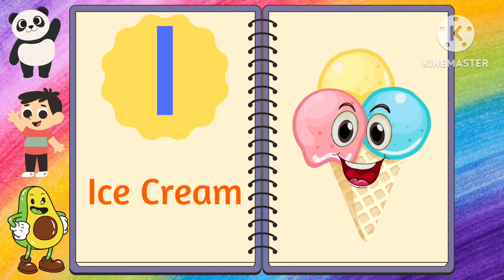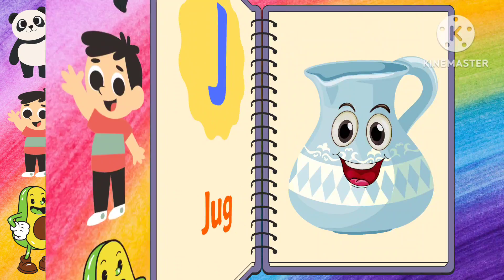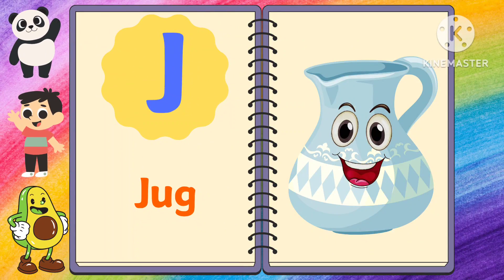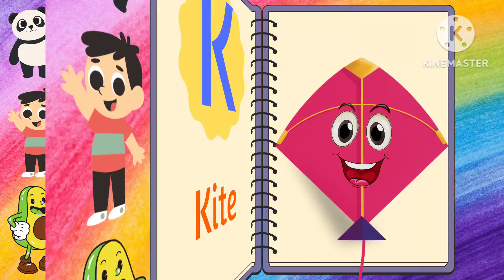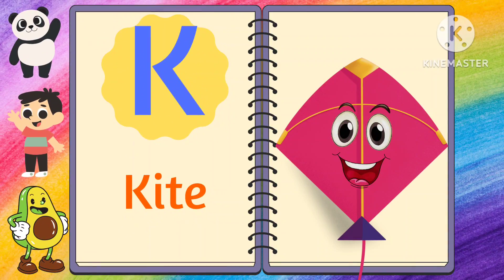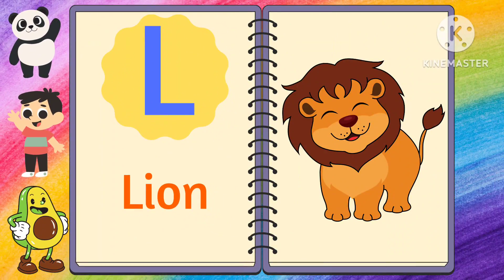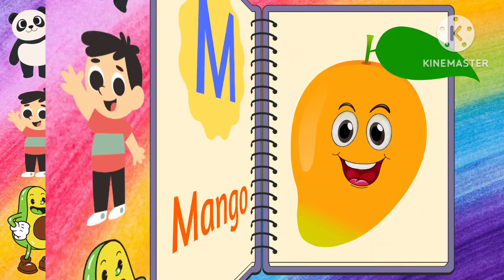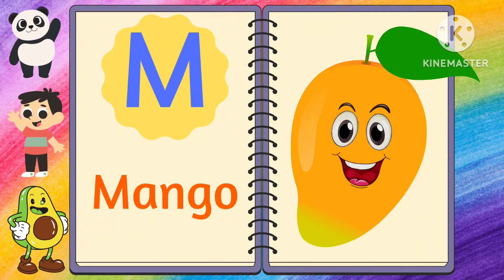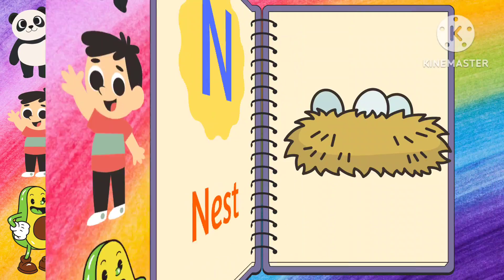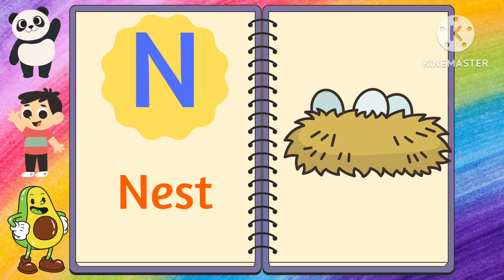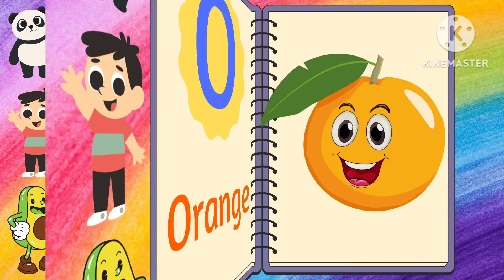I for ice cream. J for jag. K for kite. L for lion. M for mango. N for nest.